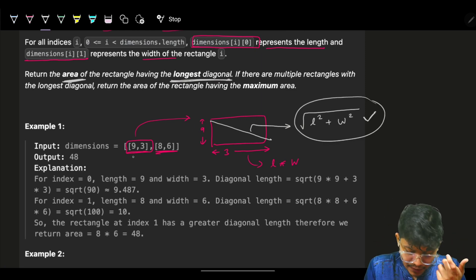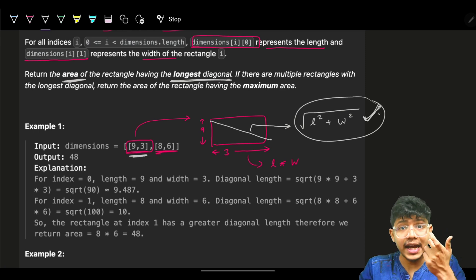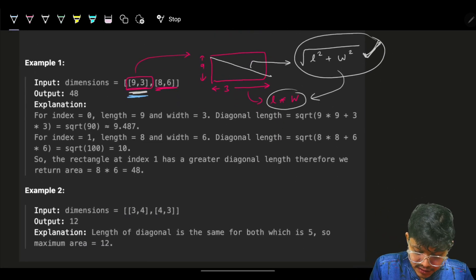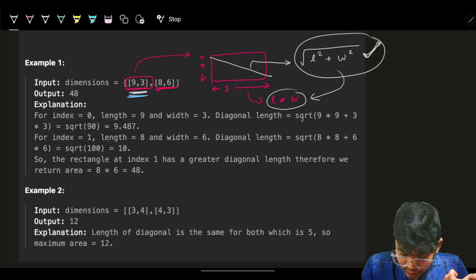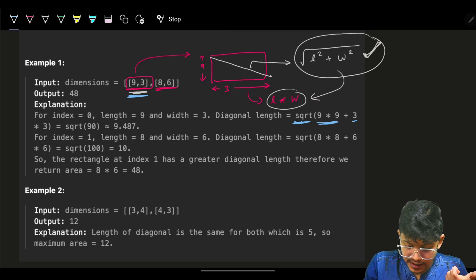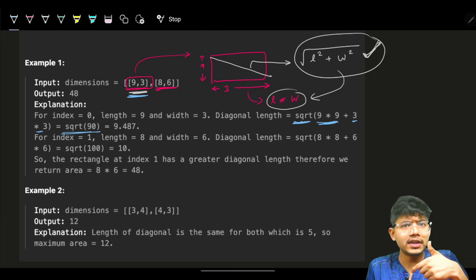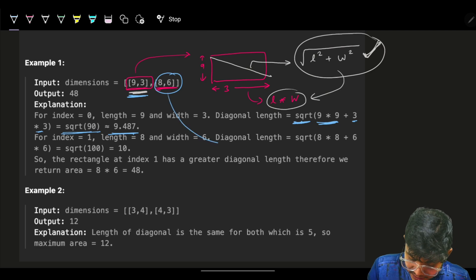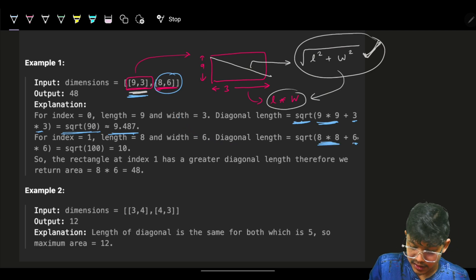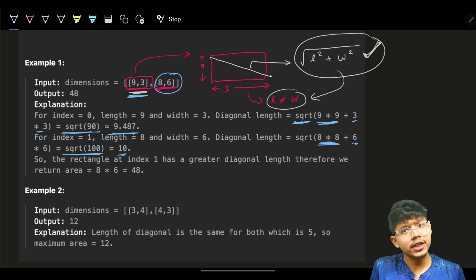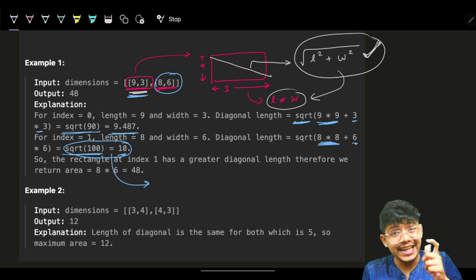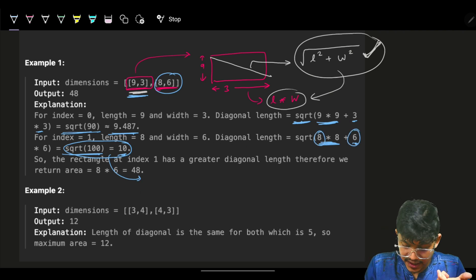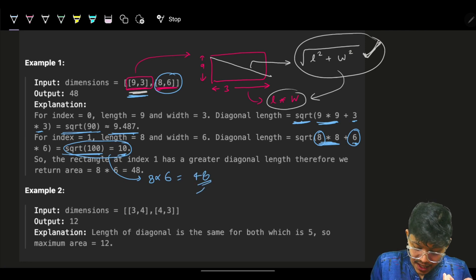The dimension having the maximum diagonal length — we have to return its area. For the first example, [9, 3]: diagonal = √(9² + 3²) = √90 ≈ 9.487. For the next one, [8, 6]: diagonal = √(8² + 6²) = √100 = 10. So [8, 6] has the longer diagonal. The area is 8 × 6 = 48, and 48 is the answer.